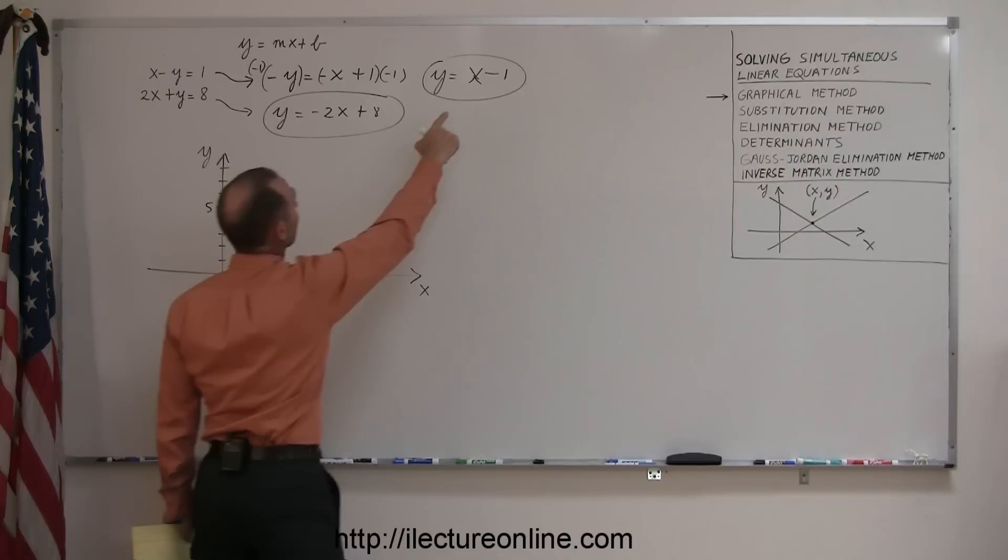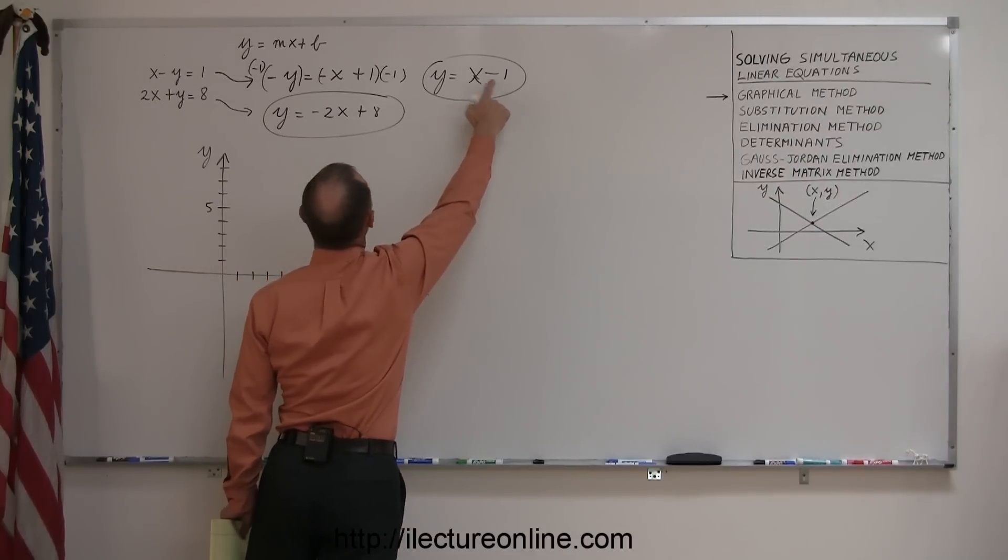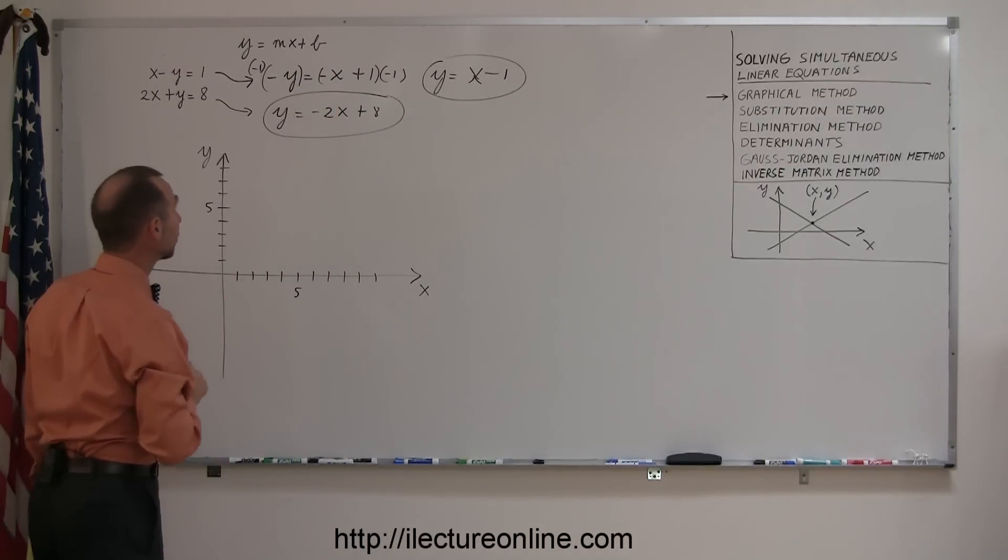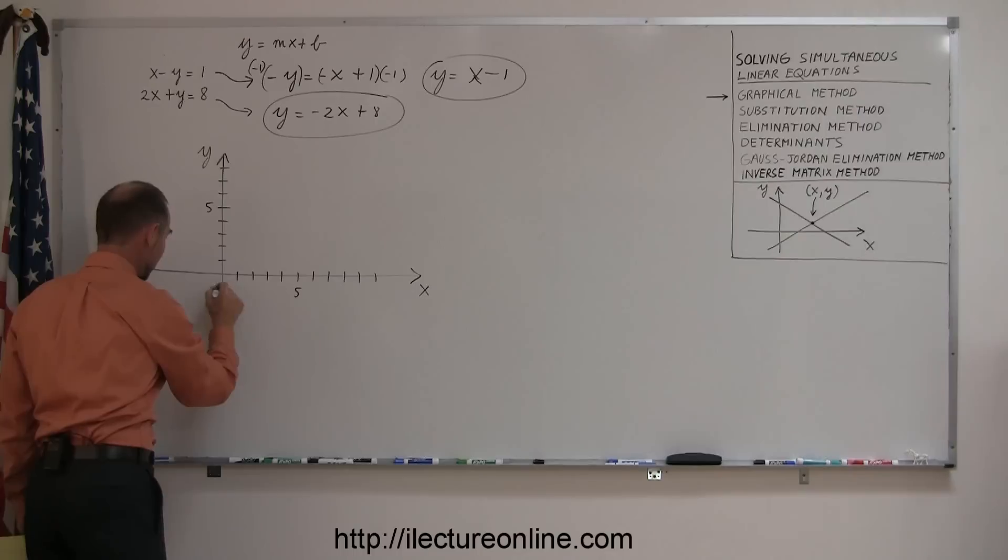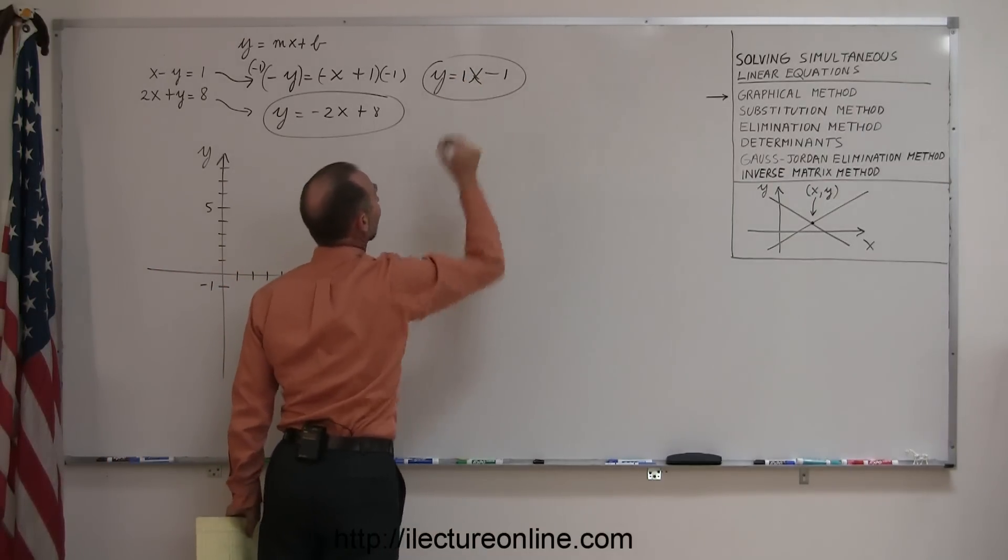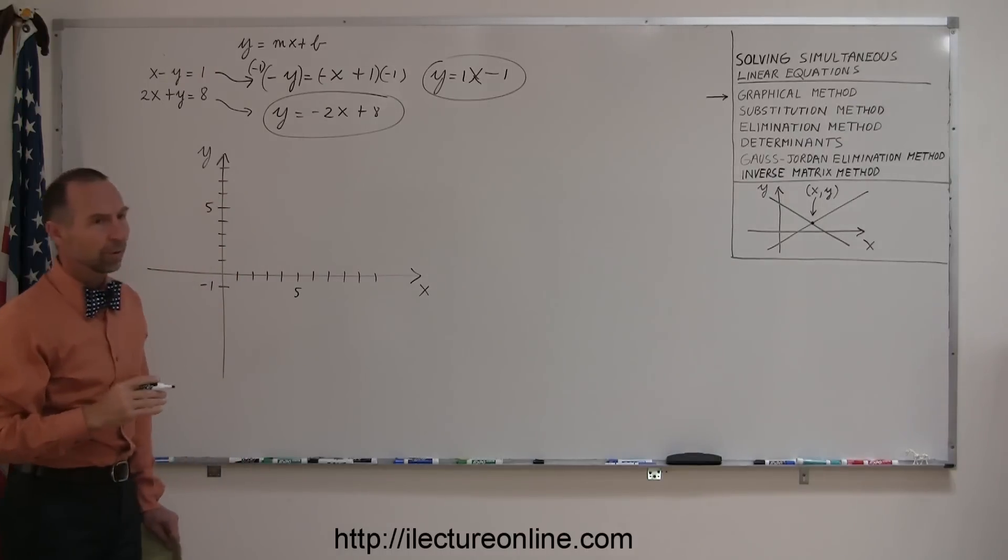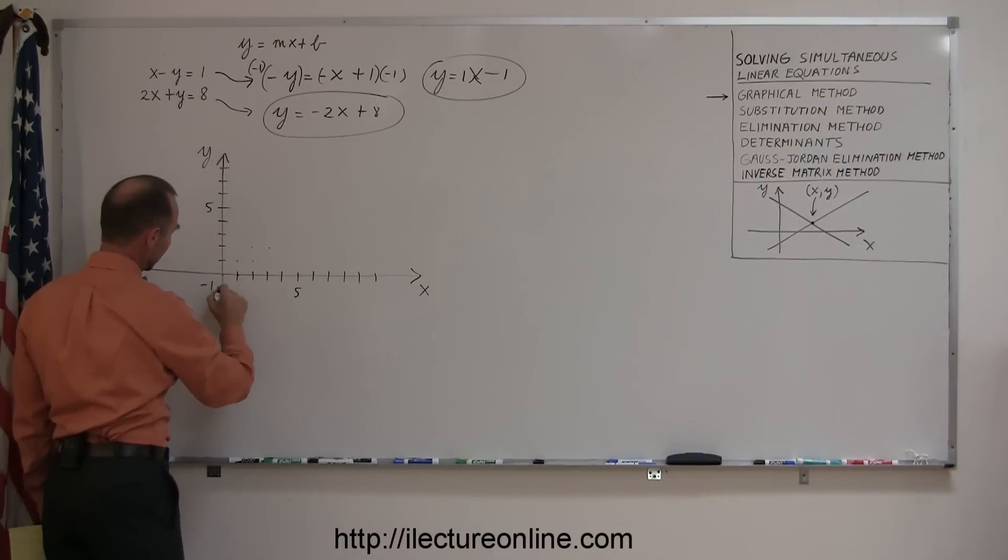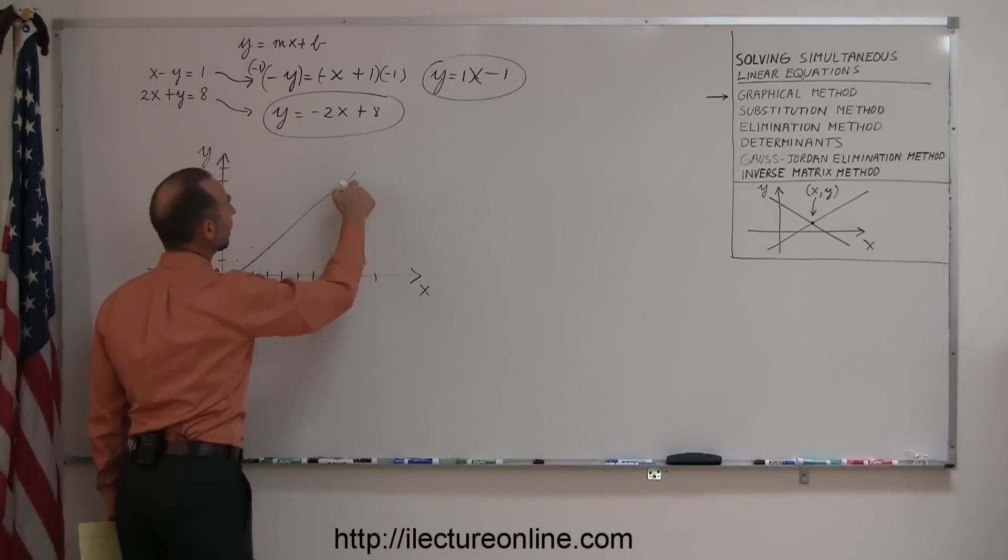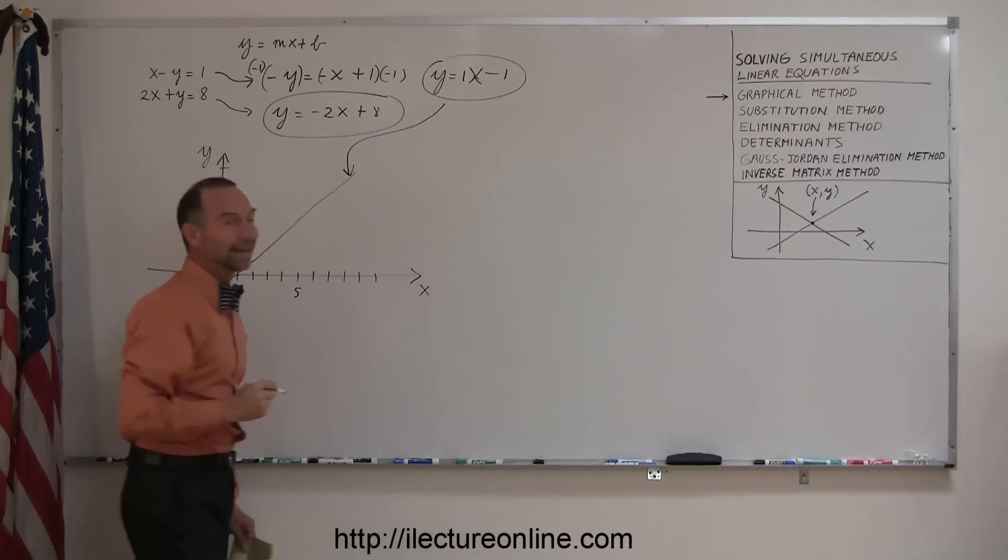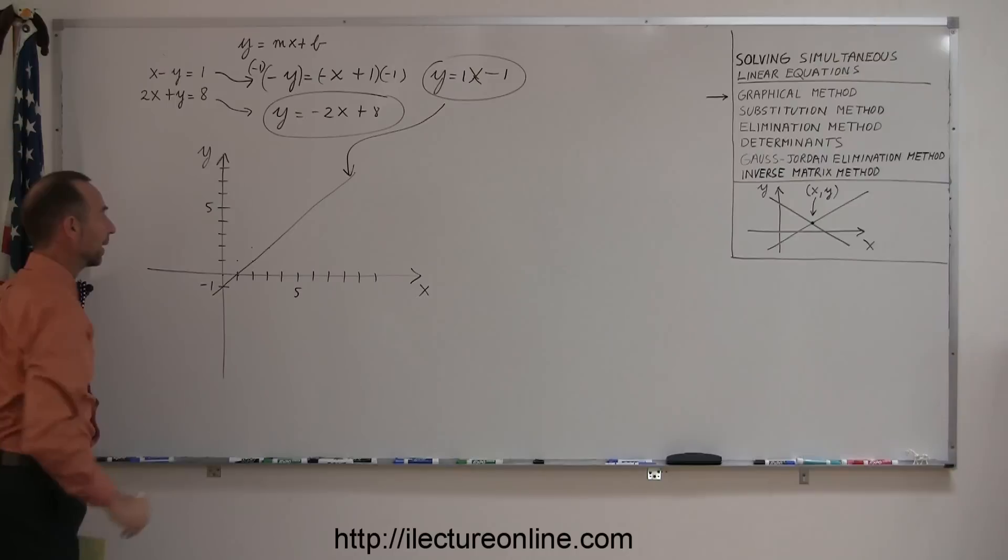All right. So my first equation, this is my intercept right here. So the plus b is my intercept. That's where the line crosses the y-axis. So negative 1 is down here. And then my slope is plus 1. So this is like 1x minus 1. So a slope of plus 1 means that I rise 1 and run 1. So when I connect these points together here, this is the line representing this equation. So my y equals x minus 1 is represented by this line.